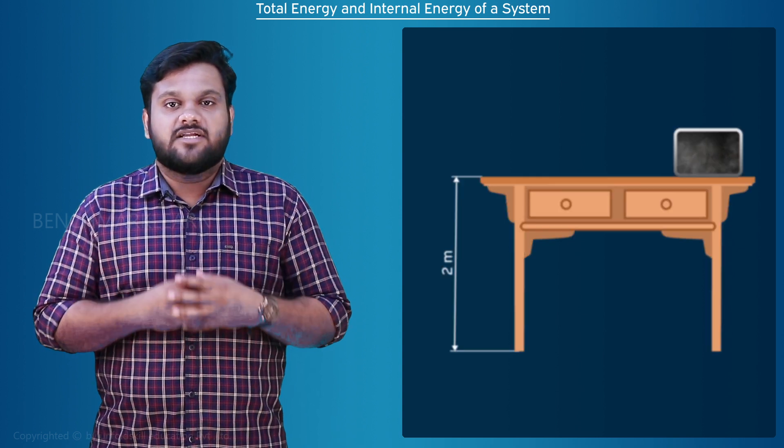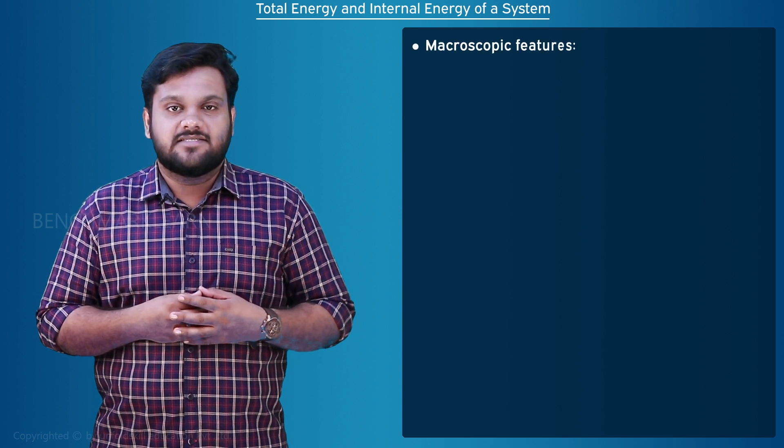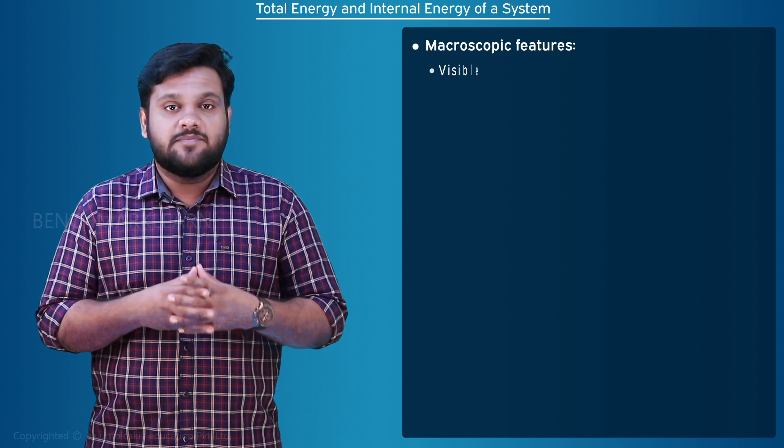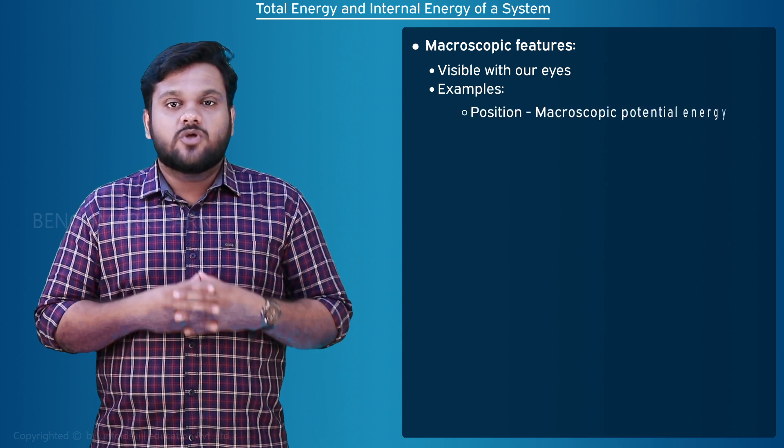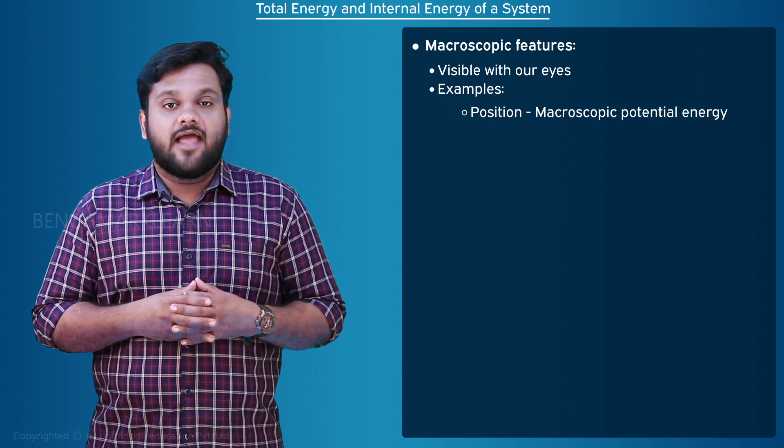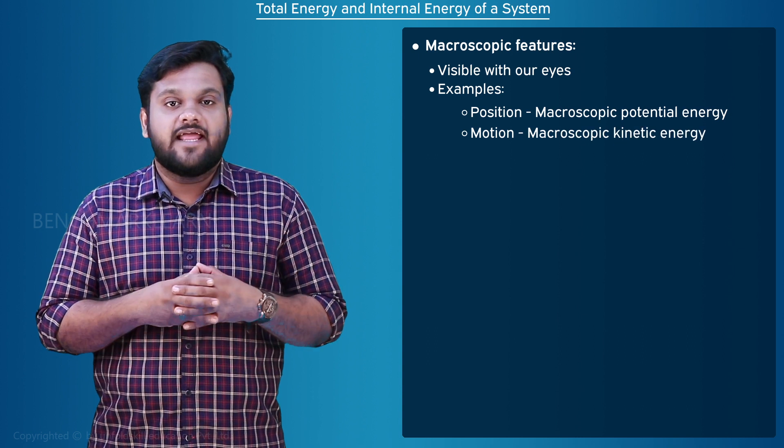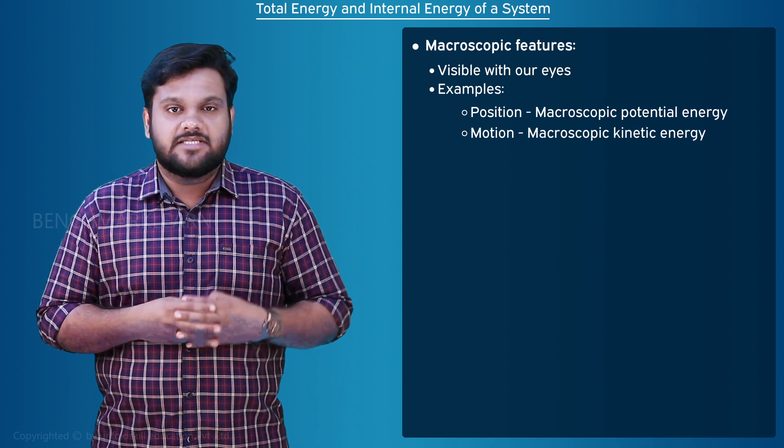Here the position and motion are macroscopic features which means they are visible with the naked eye. The position denotes the macroscopic potential energy and motion or velocity relate to its macroscopic kinetic energy.